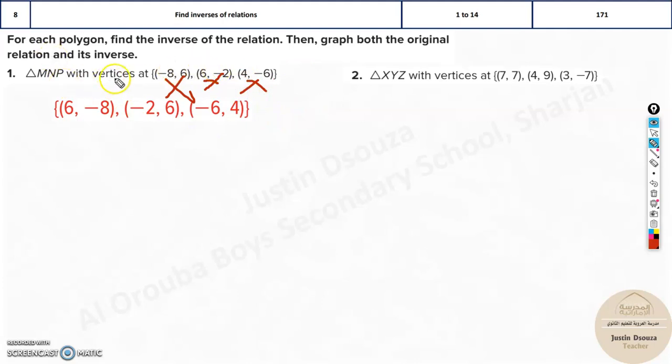For this polygon, we need to find the inverse relationship and then graph both original and the inverse. In the first coordinate, it was minus 8, 6. This x changes to y and y changes to x: 6 and minus 8. Over here, the y is minus 2, which becomes x in the inverse, whereas the x becomes y. Same way, you can write all these three points.